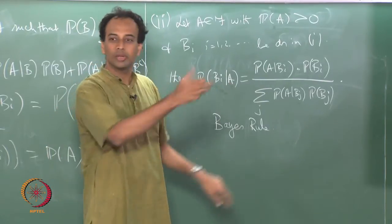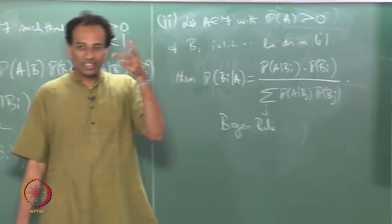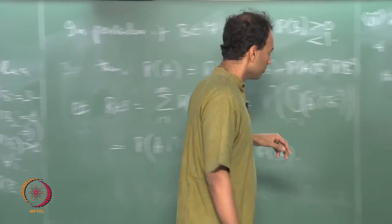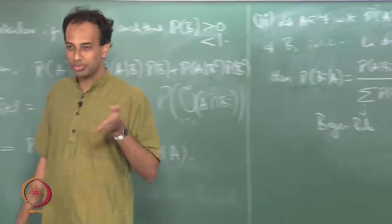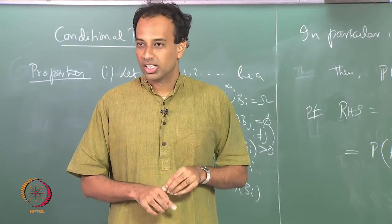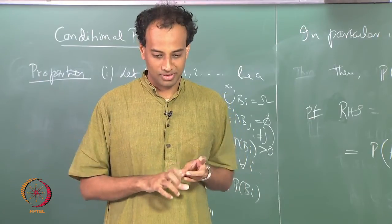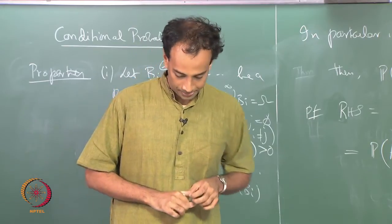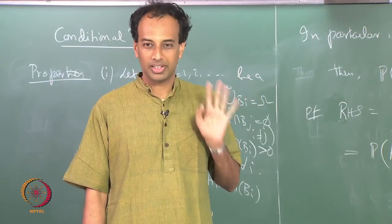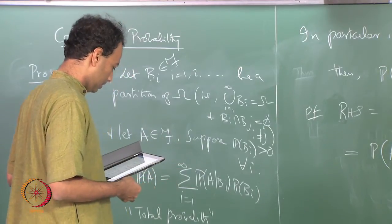This is called an a posteriori probability — you are asking a post-facto question, like 'I got a ball from urn number 27, what is the probability it was red?' A posteriori means after the fact, as opposed to a priori which means prior. Mathematically it is a very simple application of the conditional probability definition.